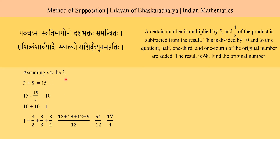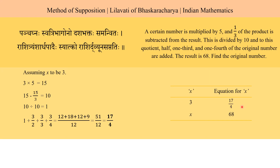When we assume the value of x to be 3, we get the value of the equation as 17/4. But the value of the equation is actually 68, so we have to find the value of x for which the equation equals 68. Let us write that in a tabular manner: when x is 3, the equation is 17/4; when x is unknown, the value of the equation is 68.